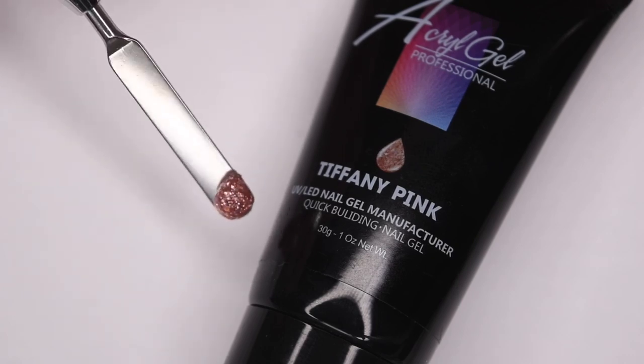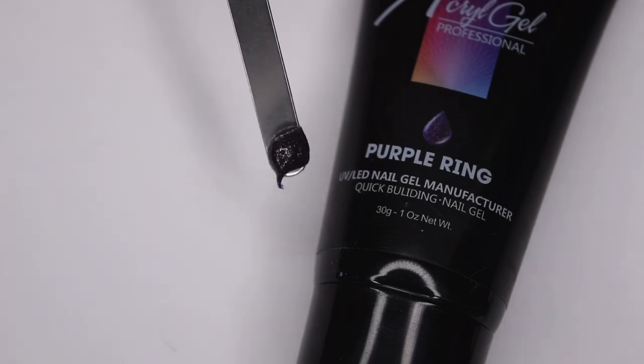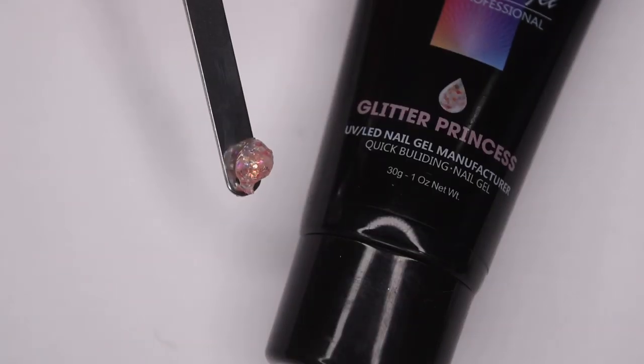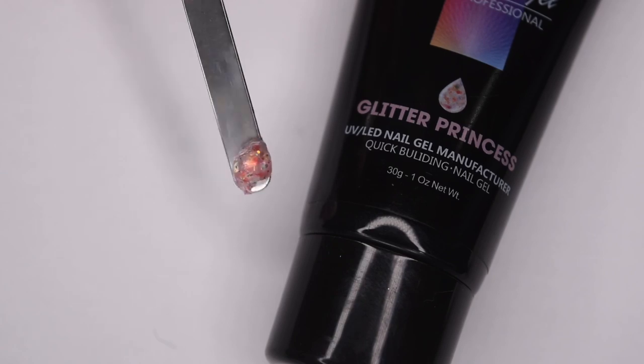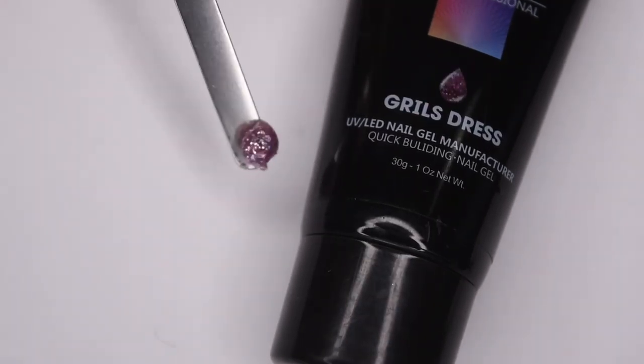So, here is Tiffany Pink, a baby pink glitter polygel, Purple Ring, which is a dark purple glitter polygel, Glitter Princess, which is a clear polygel with a ton of different glitters inside, Girl's Dress, which is another shade of pink polygel.